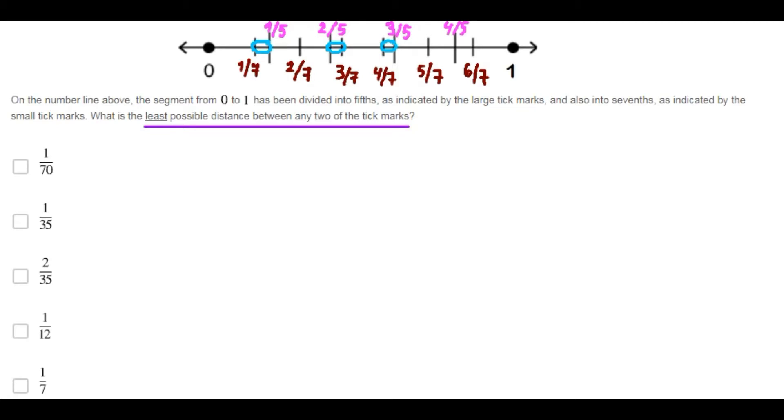So let's start with this one. The distance is one fifth minus one seventh. The common denominator is thirty-five. Here we have seven minus five, so here the distance is two over thirty-five.